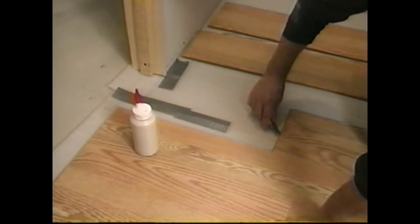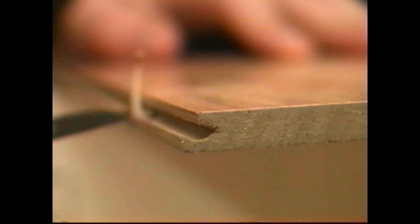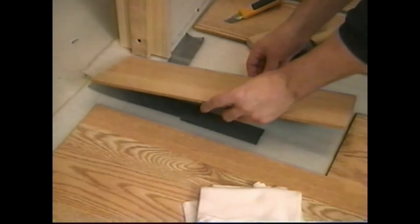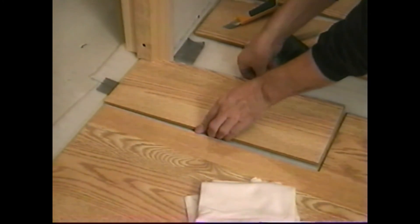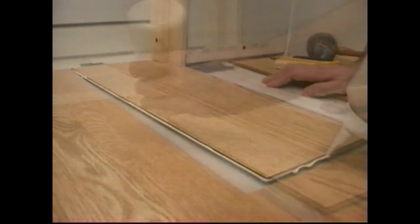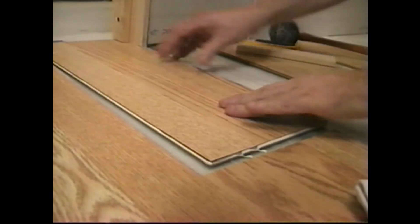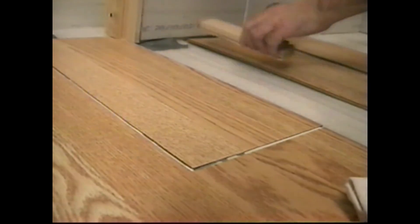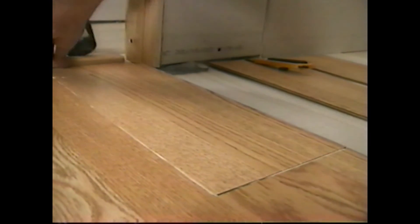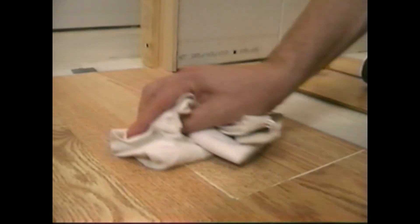Using a knife, remove the part that allows the planks to lock. Apply glue to the groove so that the planks stick together solidly, even without the locking mechanism. You can now slide the plank flat without having to lift it. Lastly, for a perfect job, wipe off the excess glue.